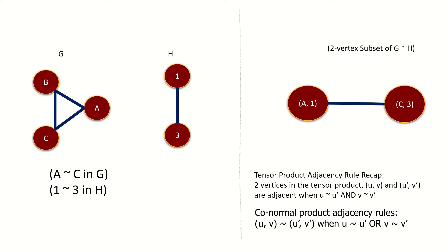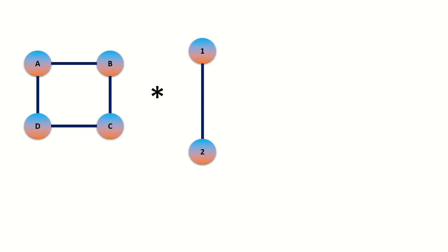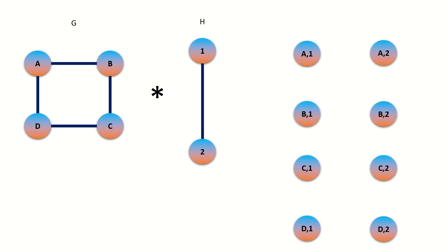Now that we've gone over the basics and connected the OR product to the tensor product, let's work through a few examples. What is the conormal product of these two graphs G and H? The vertex set is the Cartesian product of the vertex sets of the factor graphs. Next, let's connect the vertices one at a time.